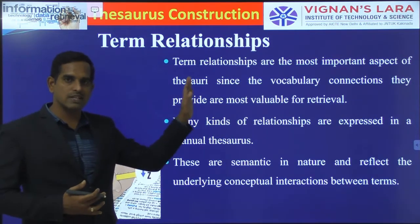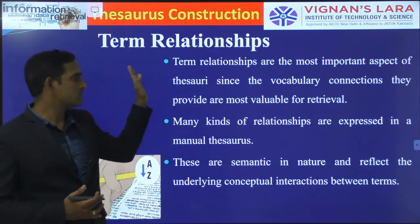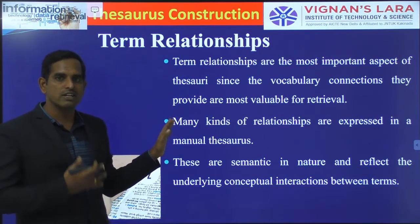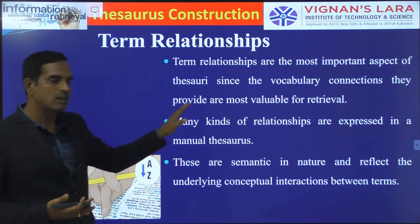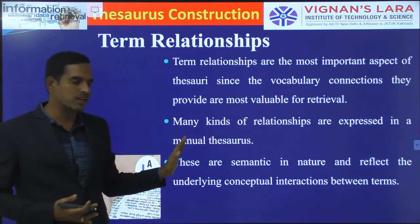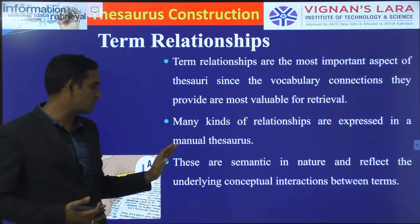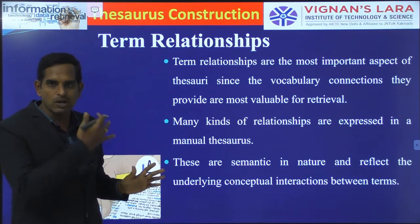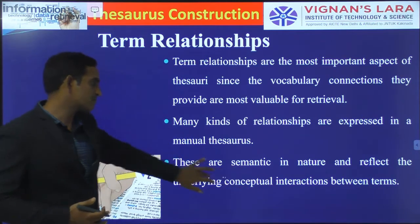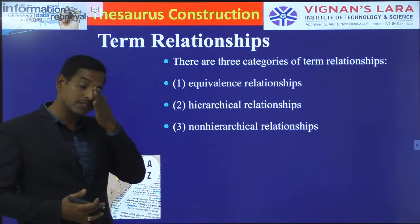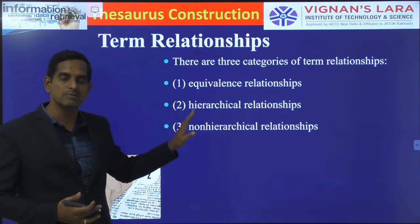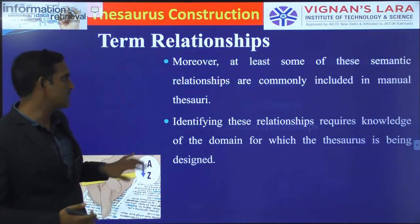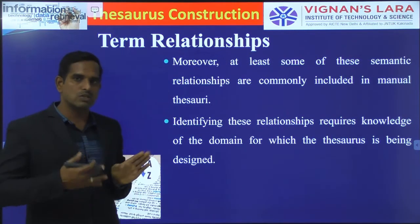The second feature of your thesaurus is term relationships. Term relationships are very useful because they help you retrieve better documents. There are many kinds of relationships expressed in a manual thesaurus, and these are usually semantic in nature and more application dependent. The types are: equivalence relationships, hierarchical relationships, and non-hierarchical relationships, and these are more semantic in nature.